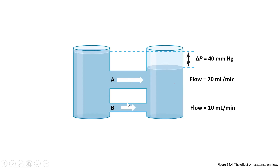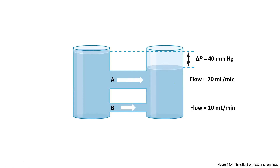A student suggests it's because conduit B is thinner — and yes, that's correct. B is thinner, meaning there's less area for the blood to flow through: a smaller radius, a smaller lumen. Because of this smaller radius, there is more resistance. And where we see a larger radius — a larger lumen — we see less resistance.